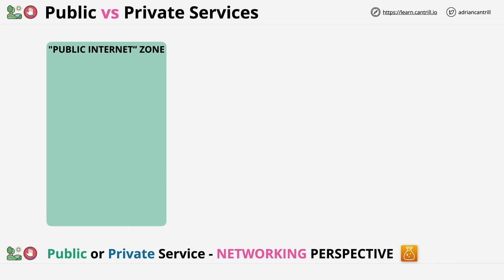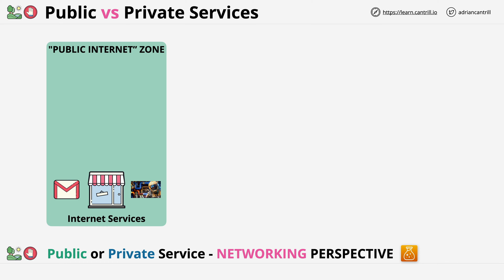First is the internet — this is the zone where internet-based services operate from, things like online stores, Gmail, and various online games. If you're sat at home playing an online game or watching training videos, chances are you're connecting to the internet via an internet service provider. Then we have private networks. If you're watching this video from home, your home network is an example of a private network — only things directly connected to a network port in your house, or people who have your Wi-Fi password, can operate in your personal private zone network.